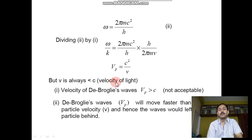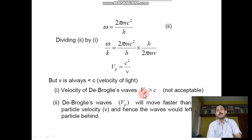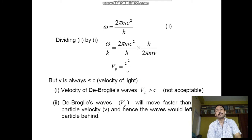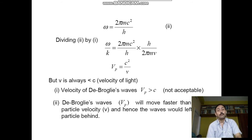Since particle velocity v is always less than the velocity of light c, the phase velocity vp = c²/v is always greater than c, which is not acceptable. De Broglie waves would move faster than the particle velocity, and hence the waves would leave the particle behind.